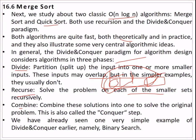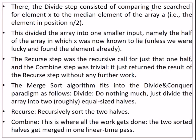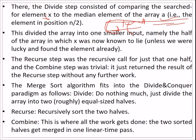We have already seen this with binary search, which uses divide and conquer. The divide step compares the searched element x to the median element at position n/2 of the array, dividing it into two halves. The recurse step calls recursively on just one half, and the combine step is trivial. Merge sort also fits into this divide and conquer paradigm.